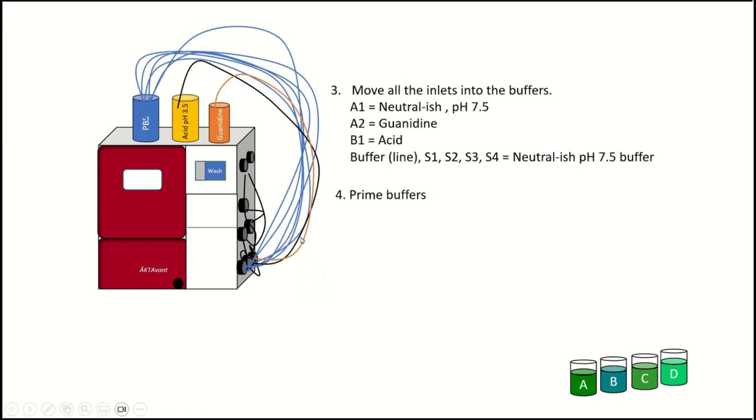After you do the water wash, then you're going to put everything into its respective buffers. So I was saying this is PBS right here, the neutral-ish running buffer. So you're going to have a lot of lines in there because A1 is going to be in that one, but also the sample pump buffer line and then S1 through 4. But then you're going to have one line in the acid elution buffer and then one in the guanidine hydrochloride. And then when you do that, you're going to use the pump wash instruction to prime all of the buffers again. So we've gone for each line, we've done water for each one and then buffer for each one.